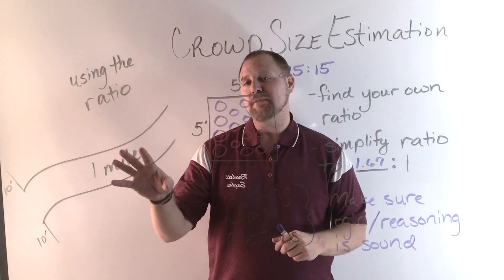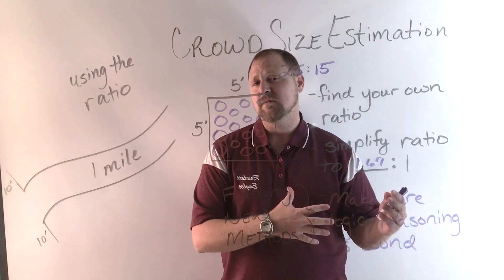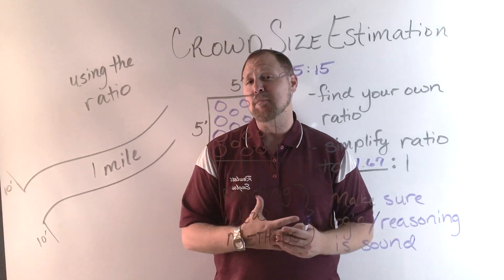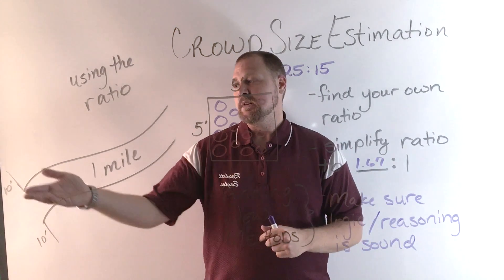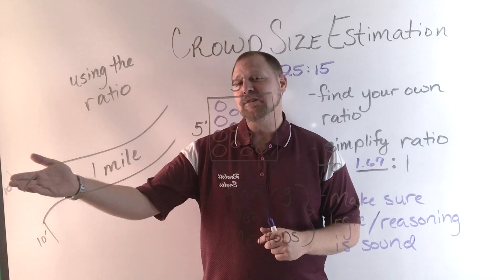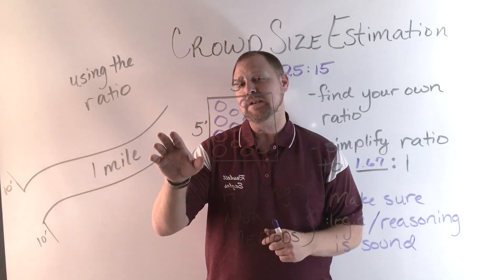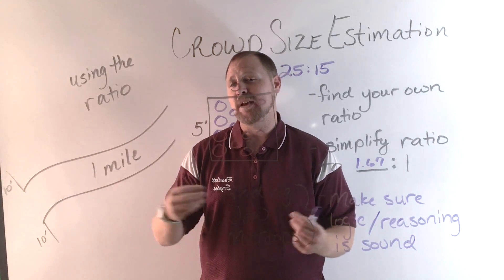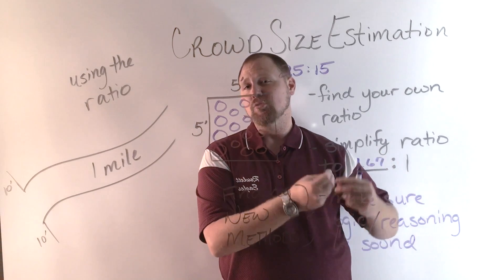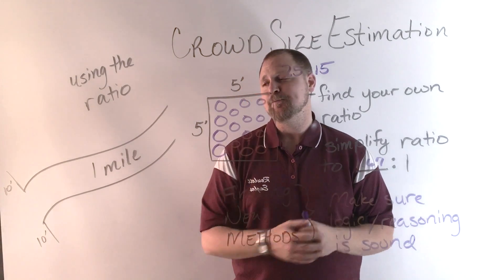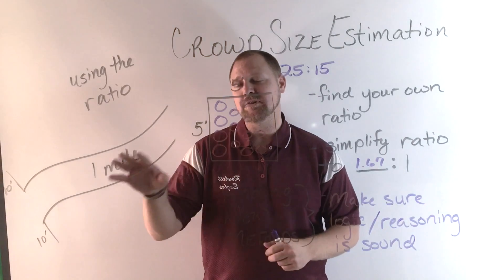Some pitfalls here: first, students may not know how many feet are in a mile, so we need unit conversions. Also, they may forget to multiply by 2 when they take 5,280 feet times 10 — they may only see 10 and not catch that word 'both,' meaning they need to multiply by 2. So the pitfalls are multiplying by 2 and unit conversions.